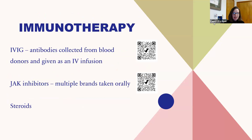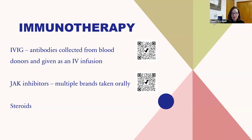In recent years, there has been a suggestion that some cases of DSRD are an autoimmune encephalitis — an inflammation of the nervous system tissue where the body is attacking itself. Different types of immune therapy have been tried: IVIG, which is intravenous immunoglobulin — antibodies collected from blood donors given as an IV infusion — JAK inhibitors (Janus kinase inhibitors), which are a form of immunotherapy that can be taken orally, and steroids like prednisone.